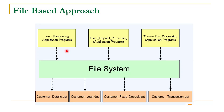For example, in a file-based system of a banking application, there are multiple applications like loan processing, fixed deposit processing, and transaction processing. These business applications use a file system which accesses multiple independent data files containing customer data, customer loan details, customer fixed deposit details, and customer transaction details. These data files are accessed through the file system, and the applications are written in programming languages like C, C++, or Java.